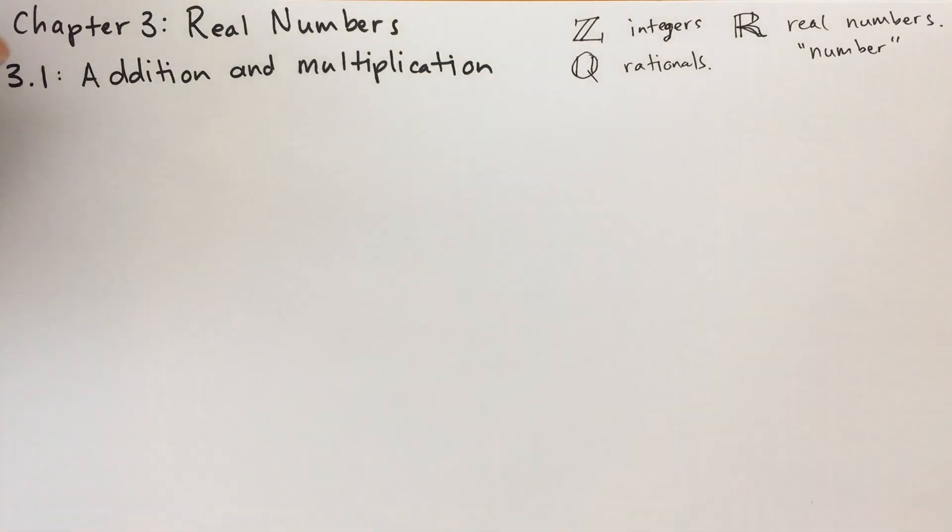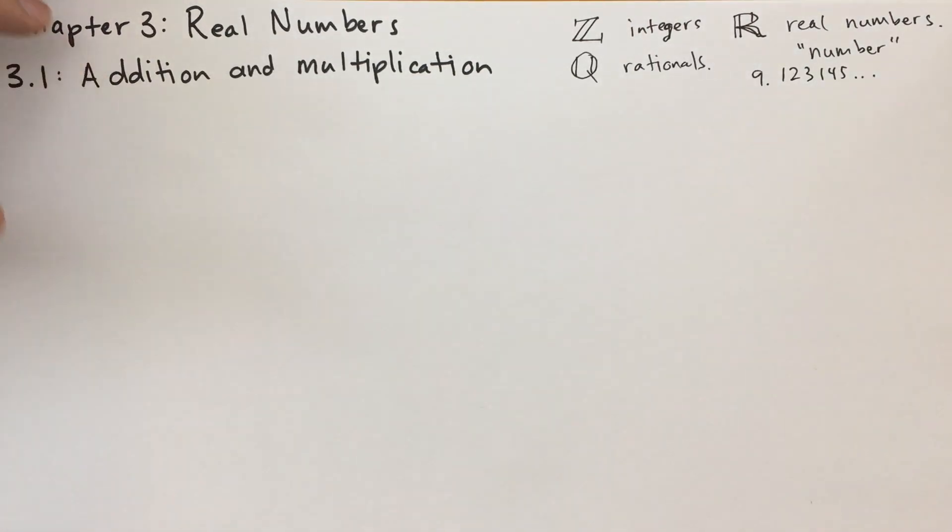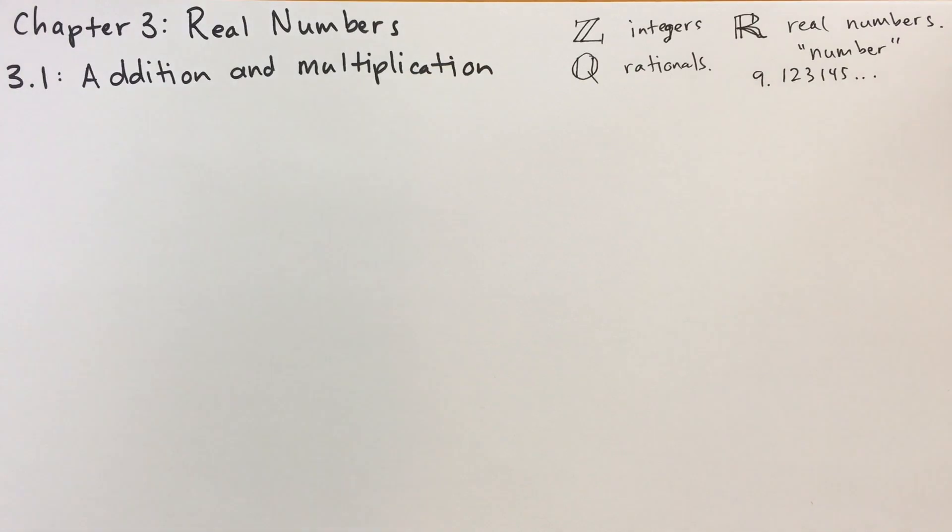Well, first, let's talk about what kinds of numbers are in the real number set. And one way to think about it is you take, and he gives the example of 9.123145. So real numbers include all the integers, all the rationals. It also includes every number that is any combination of digits. And you can have an infinite number of digits. You don't have to have a finite number of digits.